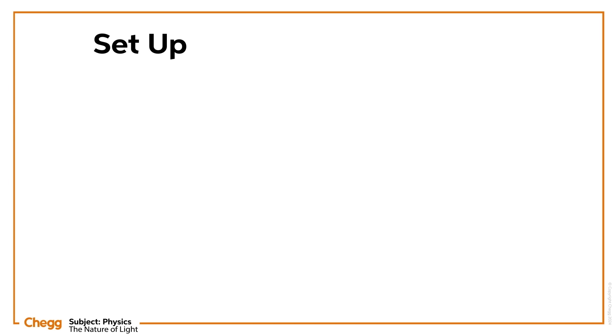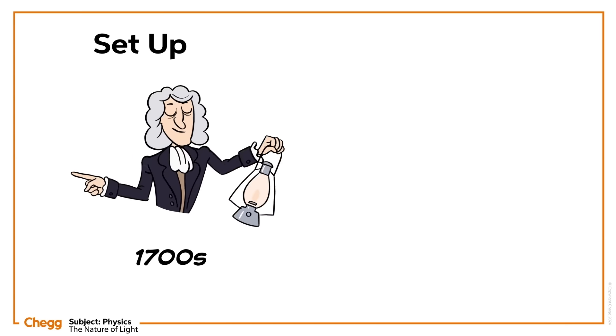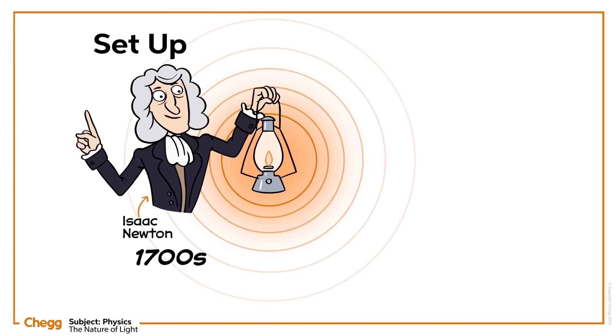First, a bit of history. Throughout the 1700s the model of light that reigned supreme came from Isaac Newton. It's called the corpuscular theory and it suggests that light is made up of small discrete particles called corpuscles that travel in a straight line.